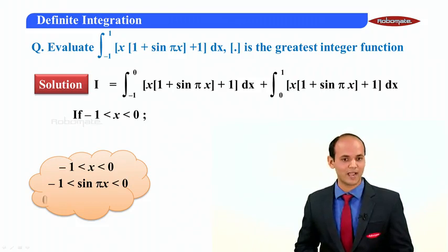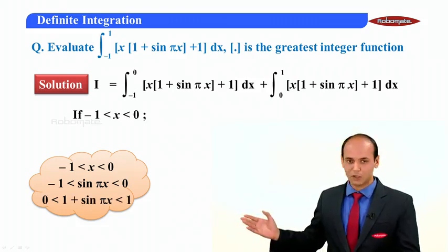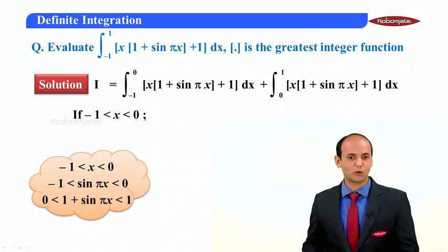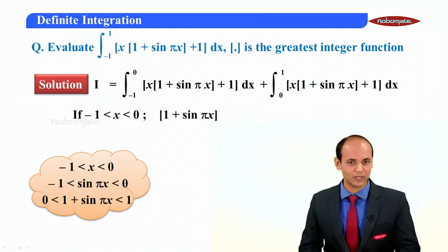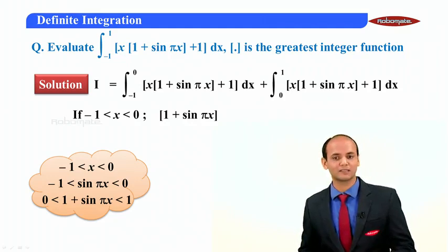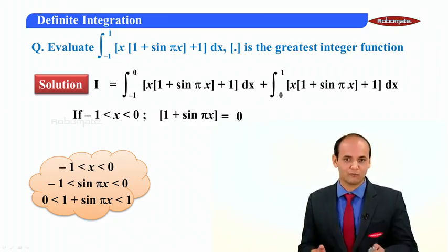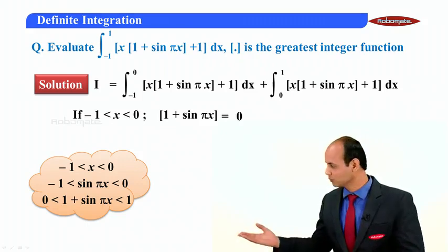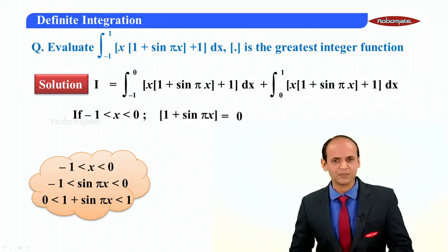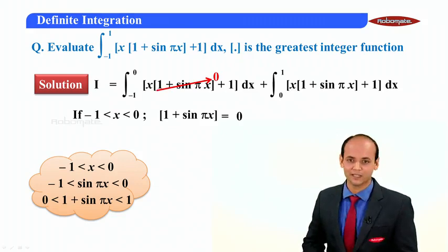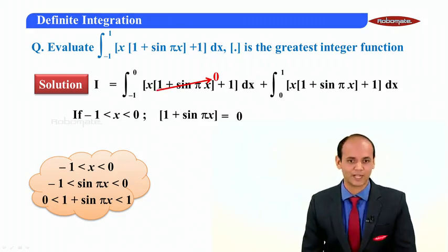When we add 1 to both sides, 1 + sin(πx) ranges from 0 to 1. Substituting this, the floor value ⌊1 + sin(πx)⌋ equals 0, since the expression lies in [0, 1). So the bracketed value becomes 0 for the first integral.